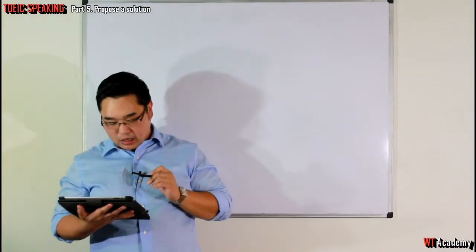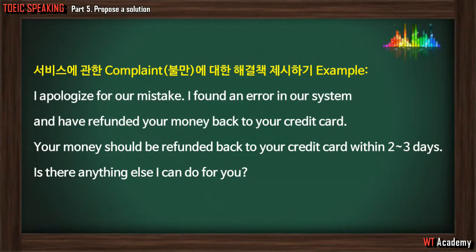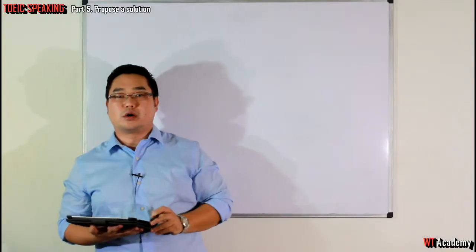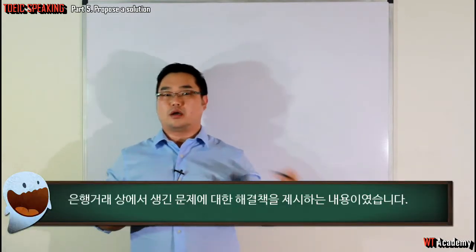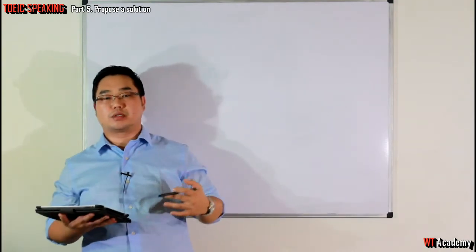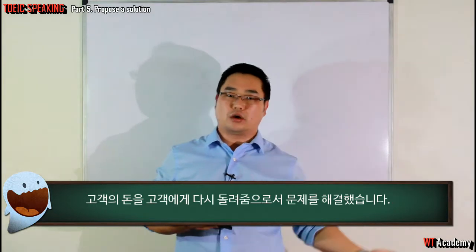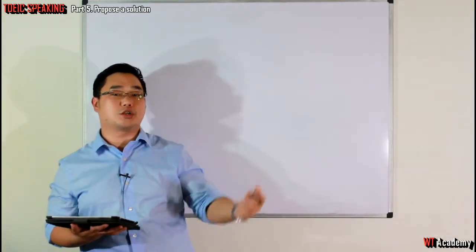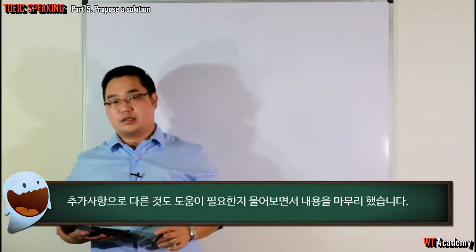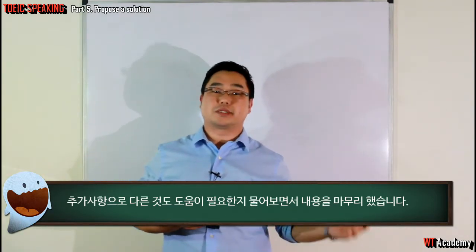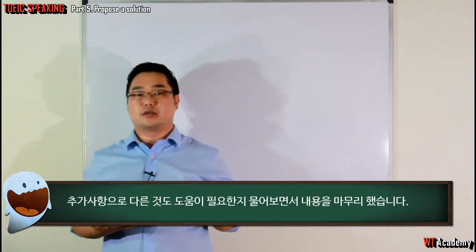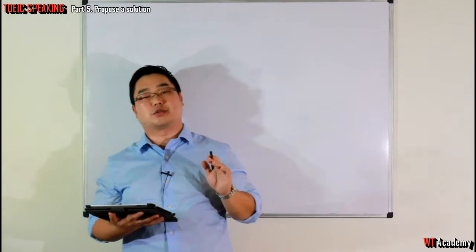The second example states: 'I apologize for our mistake. I found an error in our system and have refunded your money back to your credit card. Your money should be refunded within two or three days. Is there anything else I can do for you?' In this example, it's about a problem with a transaction. The customer service person refunded the money, provided additional information about the timing, and as a bonus offered help with any other problems.